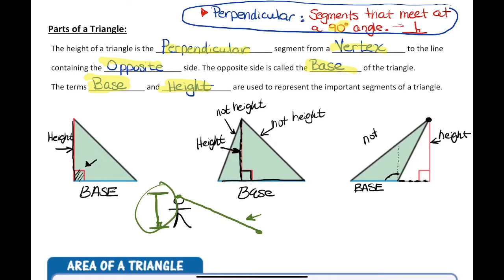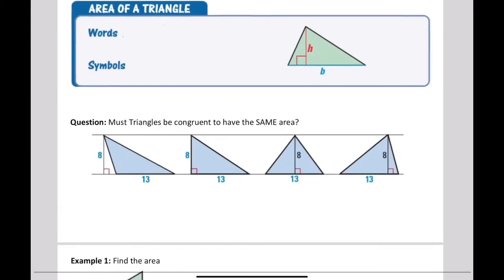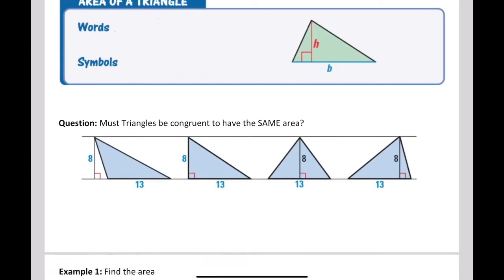These sides are not the heights — the height has to be at a 90-degree angle, that's very important. Now let's move on to the formula. The area of a triangle — the typical formula is one half times B times H. One half times the base times the height. You'll notice the area of a triangle closely resembles the area of a parallelogram.